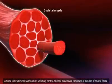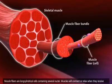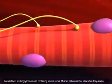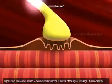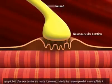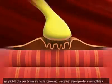Skeletal muscles are composed of bundles of muscle fibers. Muscle fibers are long cylindrical cells containing several nuclei. Muscles will contract or relax when they receive signals from the nervous system. A neuromuscular junction is the site of the signal exchange — this is where the synaptic bulb of an axon terminal and muscle fiber connect.